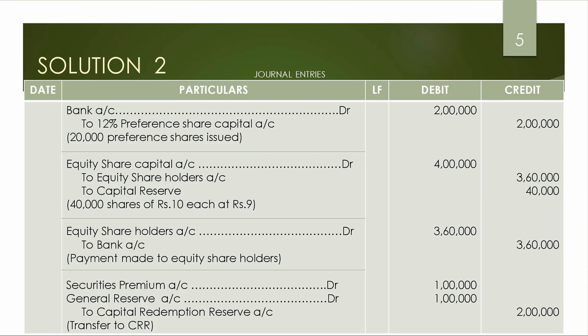We need 4 lakhs, preference issue covers 2 lakhs, so capital redemption reserve requirement is 2 lakhs. From the general reserve, we transfer 1,20,000 and 80,000, totaling 2,00,000 to cancel and create the capital redemption reserve. We have already issued 2,00,000 in equity capital, and that capital is now reduced.